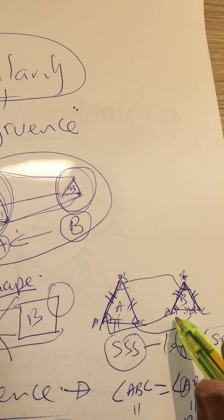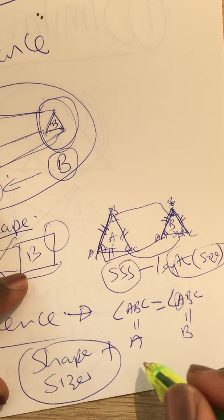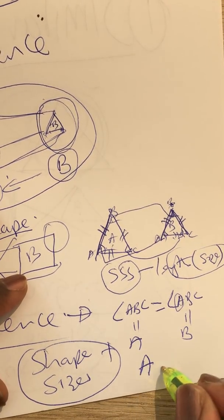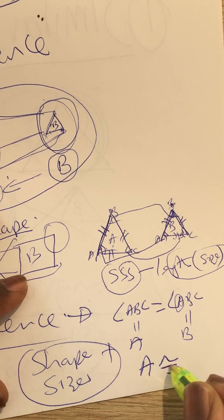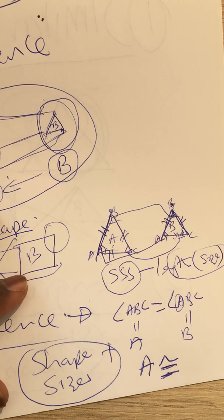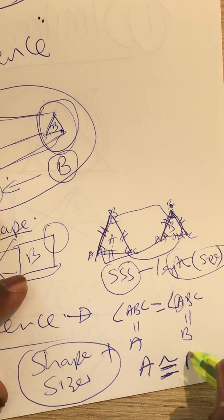So the way to present it, you can just say triangle A is congruent to triangle B. And this is just a convention of presenting the congruence in geometry.